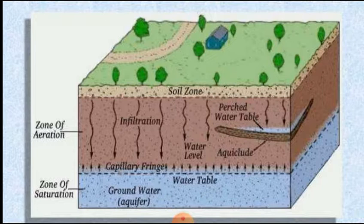Like surface water basins or catchments, also referred to as watersheds, groundwater basins also have storage and transport of groundwater. Many times these groundwater basins consist of a large aerial extent as well as depth, which can yield a significant amount of groundwater.